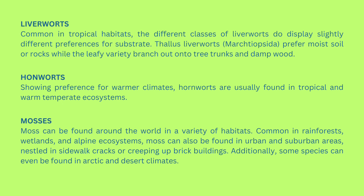Hornworts show a preference for warmer climates and are usually found in tropical and warm temperate ecosystems. Mosses can be found around the world in a variety of habitats, common in rainforests, wetlands, and alpine ecosystems. Mosses can also be found in urban and suburban areas, nestled inside cracks or creeping up brick buildings. Additionally, some species can even be found in Arctic and desert climates.